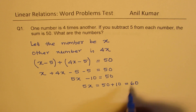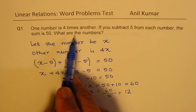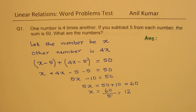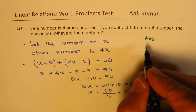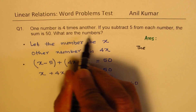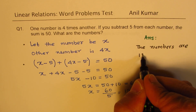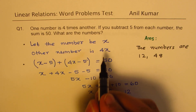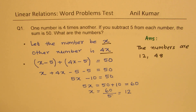So x equals 60 divided by 5, which is 12. What are the numbers? Let's write down our answer. You get marks for defining variables — that is the let statement — then the method being followed, and then writing the answer. The numbers are: one number is 12, the other one is 4 times 12, which is 48. Now let's take the second question.